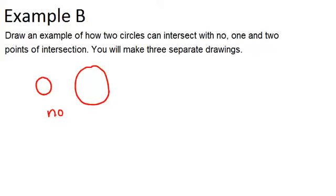If they intersect once, then they are considered tangent. And one way that could happen is just if they're externally tangent and just touch once right here. So that would be one point of intersection.